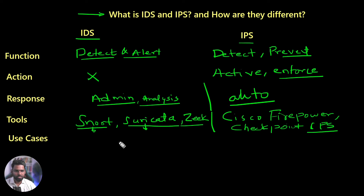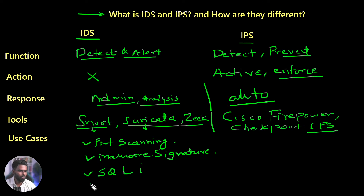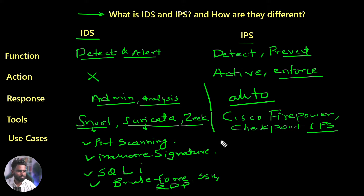Let's talk about some use cases. IDS is very popular for detecting port scanning related alerts, detecting malware signatures, web application related attacks like SQL injection, and brute force attacks — maybe SSH or RDP related brute force attack attempts.